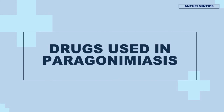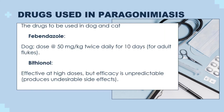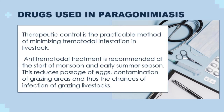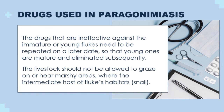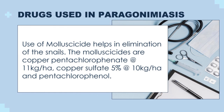Drugs used in paragonimiasis include praziquantel, albendazole, fenbendazole, and bithionol. The most practical approach to reducing trematodal infestation in livestock is therapeutic control, especially at the commencement of the monsoon and early summer seasons. Anti-trematodal therapy lowers egg transit, grazing area contamination, and consequently the risk of infection in grazing sheep. Ineffective medications against immature or young flukes must be repeated at a later date so that young flukes grow and are eventually destroyed. Livestock should not be allowed to graze on or near marshy areas, which are home to the intermediate host of the flukes. Molluscicides are helpful in getting rid of snails: copper pentachlorophenate at 11 kg per hectare, copper sulfate 5% at 10 kg per hectare, and pentachlorophenol are the molluscicides.